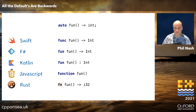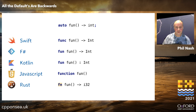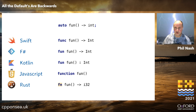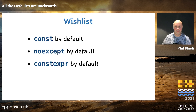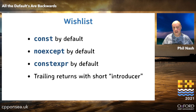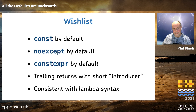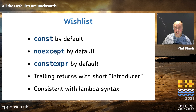I think Rust has probably got the balance right. It uses two characters for what we call the function introducer — actually half the number of characters we're using in the C++ example. Let's knock up a wish list: we want const by default, noexcept by default, constexpr by default, trailing return types with a short introducer — Rust's two characters was pretty good — and consistency with lambda syntax, since we like lambdas, they're good.